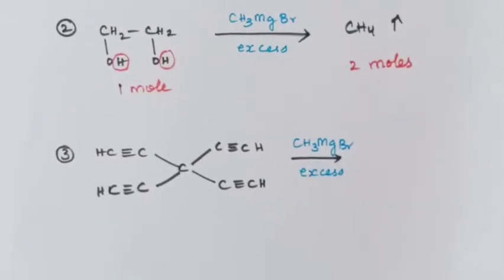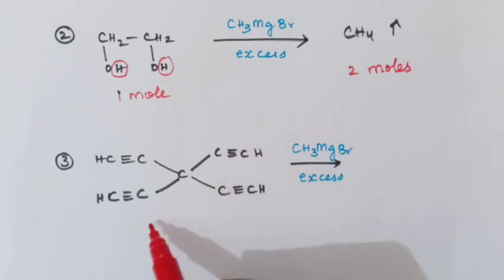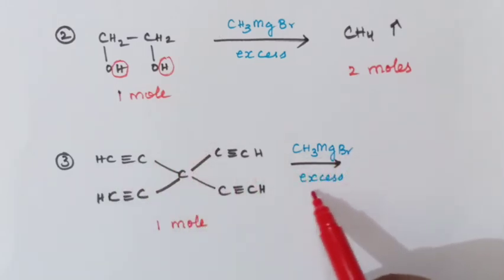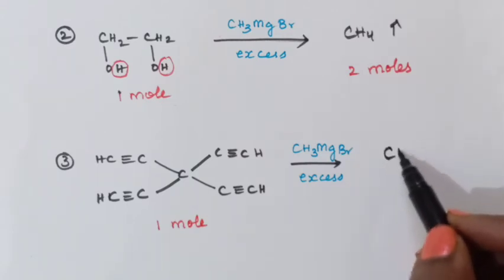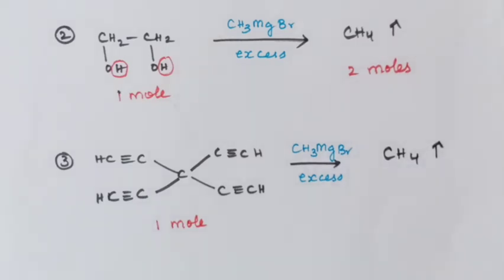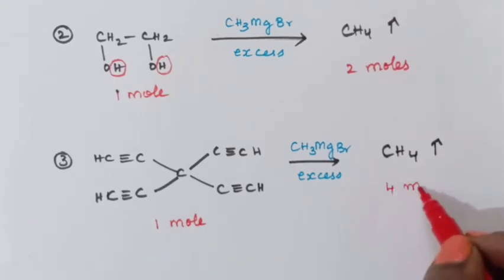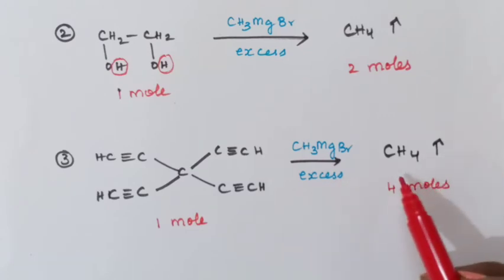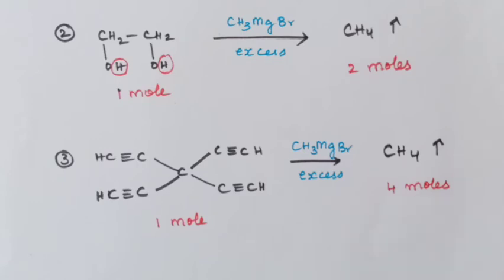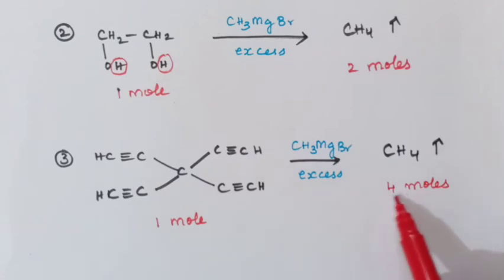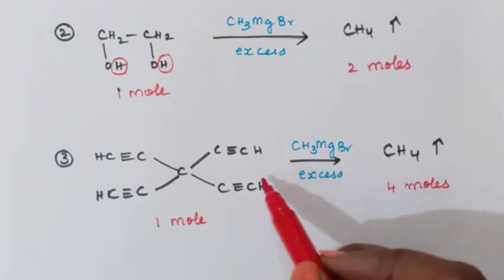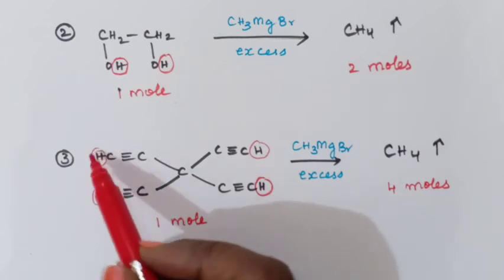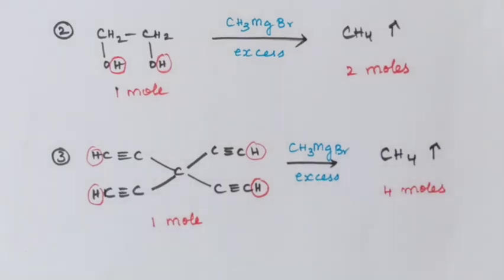Take a third example. Take one mole of the compound and treat with methyl magnesium bromide, which is taken in excess. The product will always be methane gas. Here four moles are evolved. You have taken one mole of the reactant, and four moles of methane gas are evolved. That means four acidic hydrogens are present in the compound — you can identify all four of them.